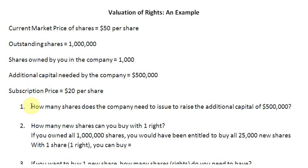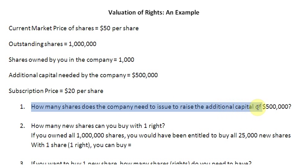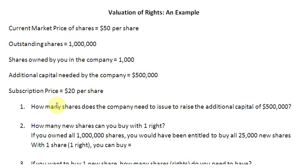The first question is: how many shares does the company need to issue to raise the additional capital of $500,000? The answer is straightforward — we take $500,000 and divide it by the subscription price of $20 per share, giving us 25,000 new shares.